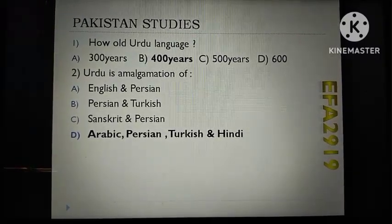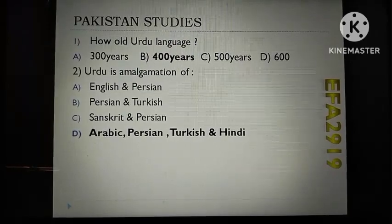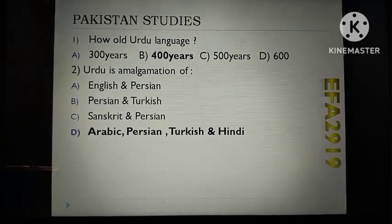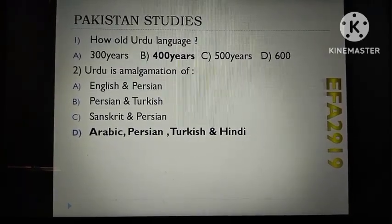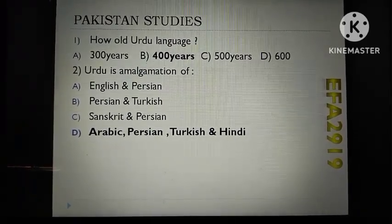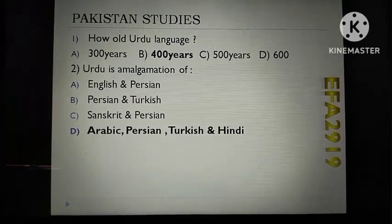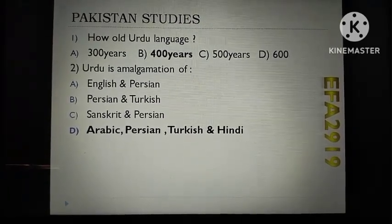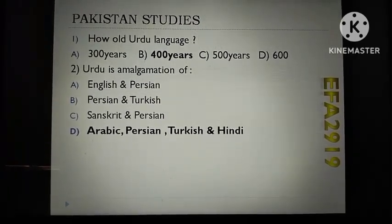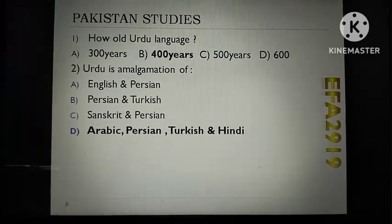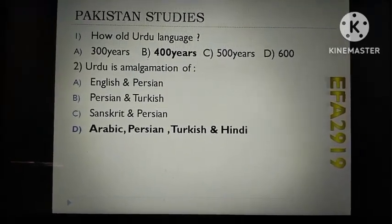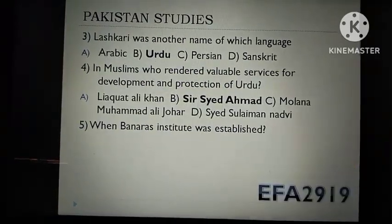How old is the Urdu language? 300 years, 400 years, 500 years, or 600 years? 400 years is the correct answer. Urdu is an amalgamation of Arabic, Persian, Turkish, and Hindi. So Arabic, Persian, Turkish, and Hindi is the correct answer.